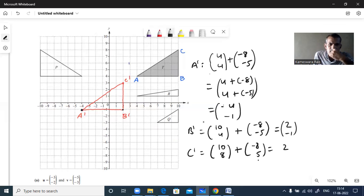Wait a second. Minus 5, no sorry. 8 minus 5 it is 3. So 2 comma 3 is C dash. This is C dash.